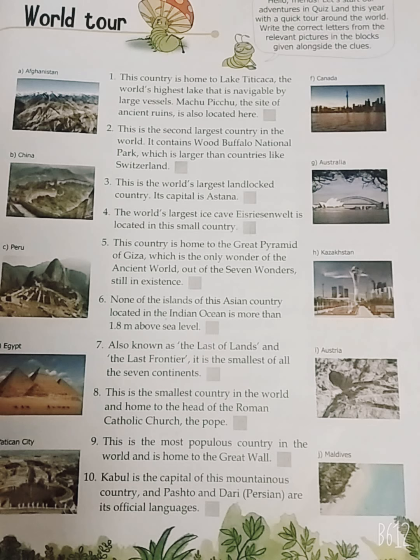Have you noted down? Seven: also known as 'the land of last' and 'the last frontier,' it is the smallest of all the seven continents. Yeh 'last of lands' aur 'last frontier' ke naam se jaani jaati hai, aur yeh saat mahadweepom mein sabse chhota hai. Answer is G — Australia.